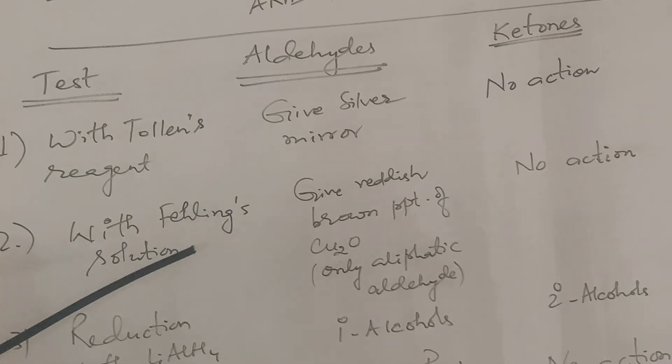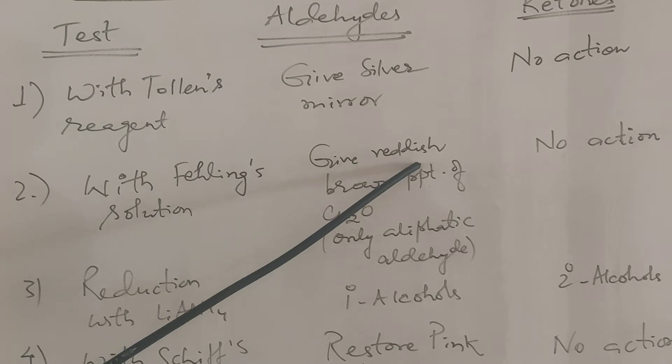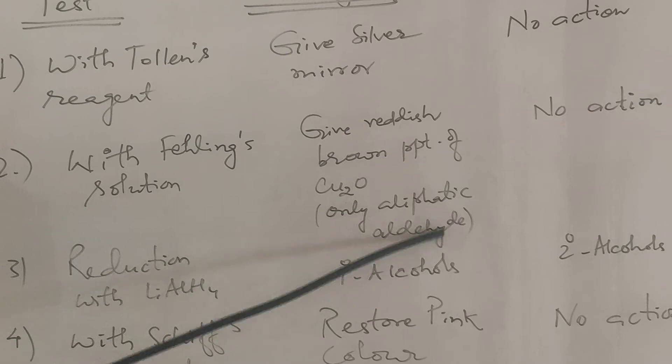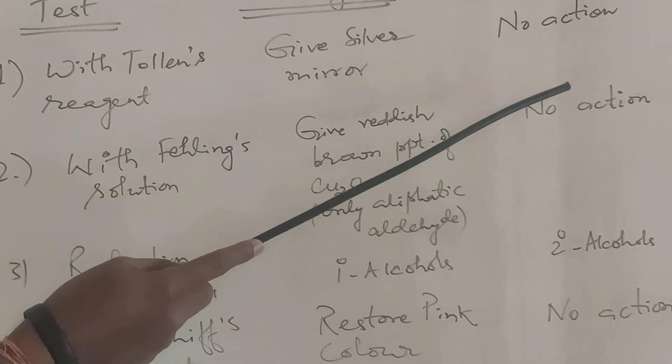Second is Fehling's solution. With Fehling's solution, aldehydes give a reddish brown precipitate of Cu2O. This is given only by aliphatic aldehydes, not by aromatic aldehydes. Ketones do not respond.